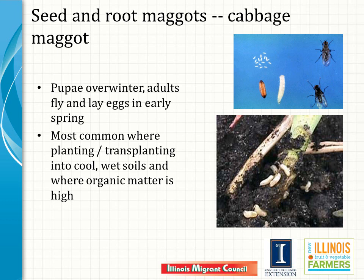Let's start with seed and root maggots. We'll cover three that are most important, starting with cabbage maggot. Cabbage maggot is the larval stage of a fly; the pupal stage overwinters, and adults fly and lay eggs early in the spring in the soil. The maggots feed on decaying organic matter and then on the roots of cabbage family crops. They're most common where planting is done into cool or wet soils and where organic matter is high.